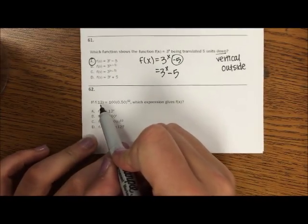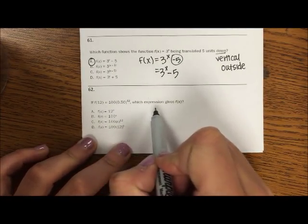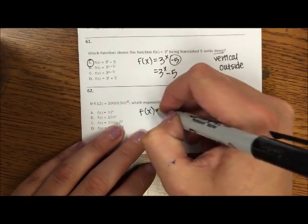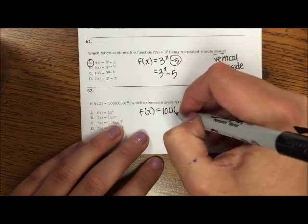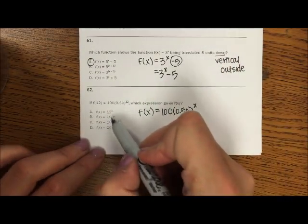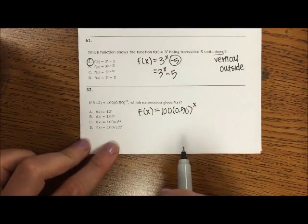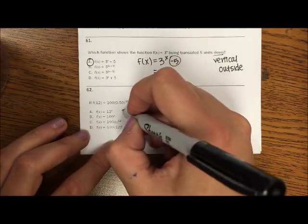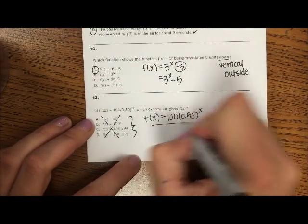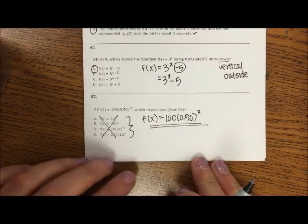And then if f(12) = 100 times 0.5^12, which represents f(x). So let's rewrite this. So instead of f(12), f(x), which means that I need, wherever there's a 12 in this, I'm going to put an x. Well, looking at our options, it looks like they've made a mistake. So none of these options are going to work. This would be your resulting option. So number 62 has a flaw.